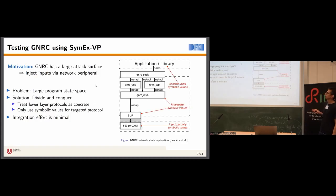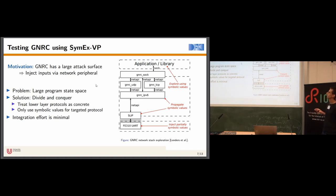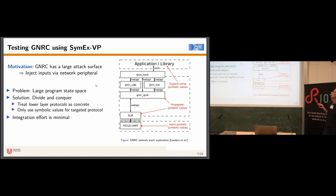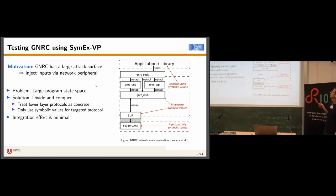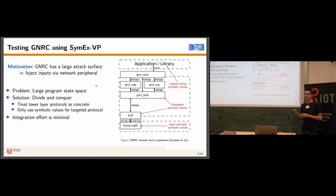The symbolic values are injected through a UART provided by the SiFive E51, and interpreted as SLIP frames by RIOT to transport IP datagrams over the UART. Since the lower layers are concrete, the IPv6 and UDP implementations simply forward these bytes, and they ultimately end up in the library or application we are targeting — like an MQTT-SN implementation — which is then explored based on the symbolic values in the UDP payload.